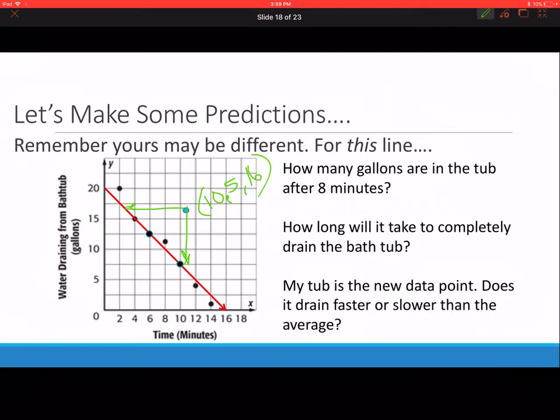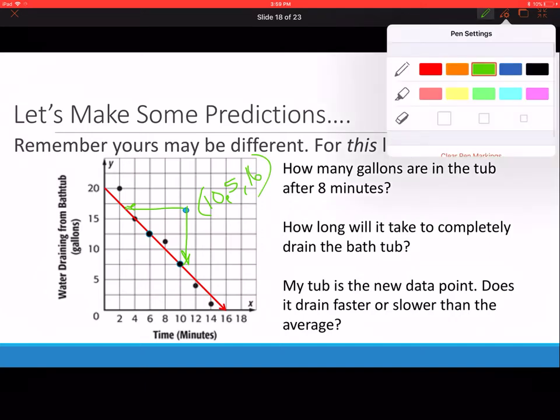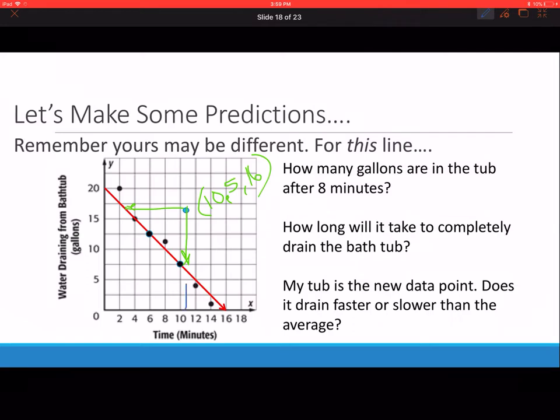But the average at 10 and a half minutes would have closer to 6 gallons in it. The average is going to have less water in it, which means it drains faster. So mine drains slower than the average.